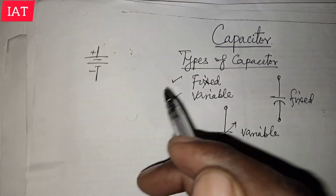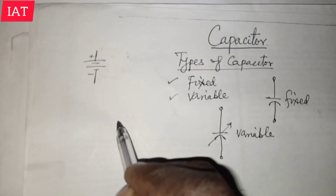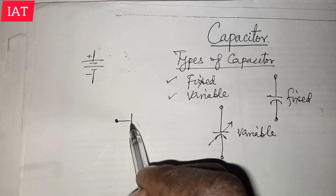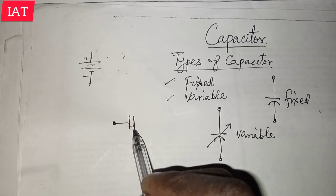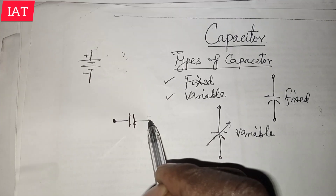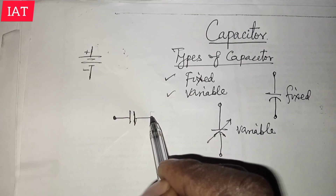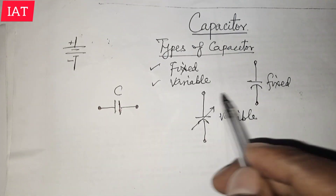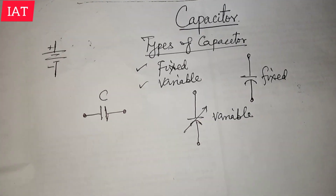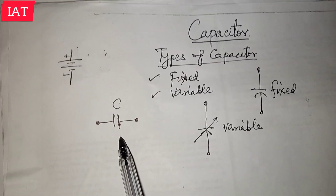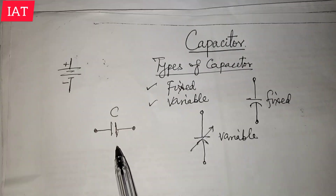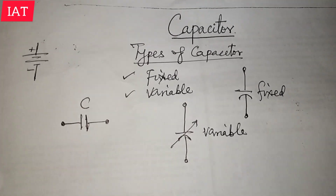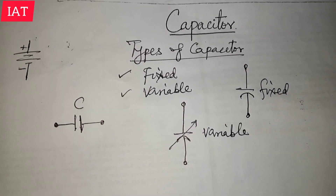In simple terms, the symbol of a capacitor is represented as two parallel plates — two parallel lines. This is what we'll be using mostly for the main work we're going to do in this topic. You may also want to know the unit in which capacitance is measured.